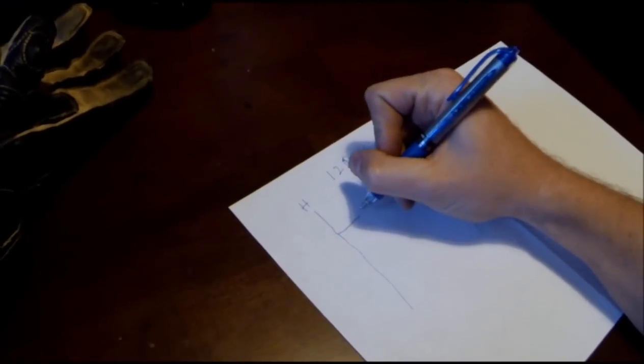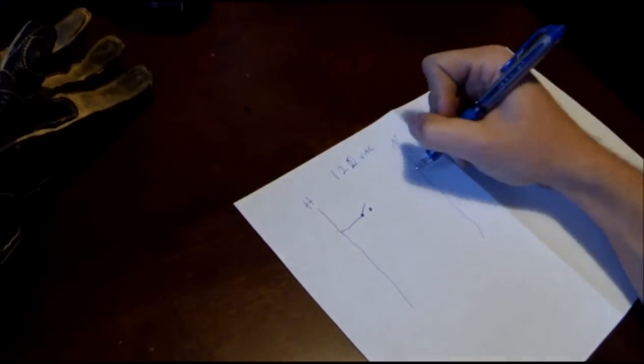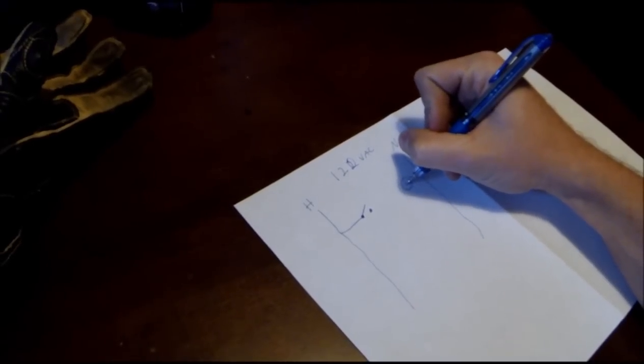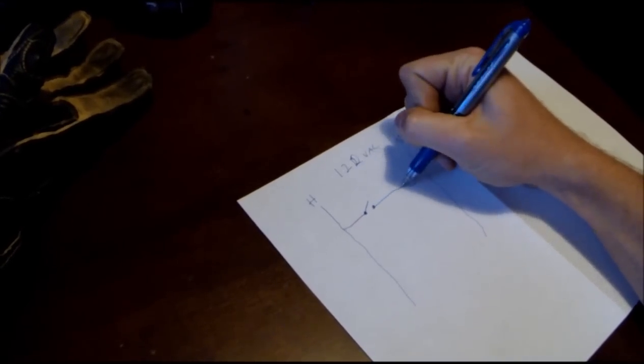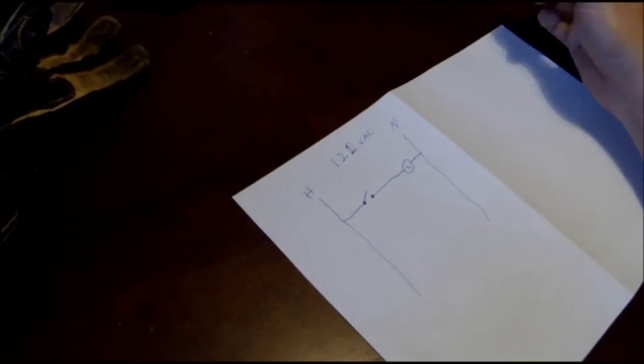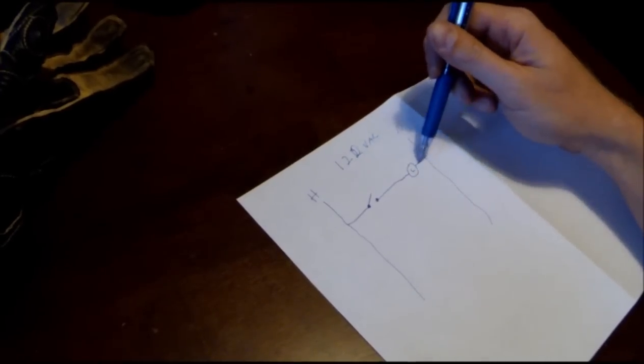This is going to be our hot and our neutral, just as an example. You always switch your hots. So if we had a single pole switch, this was a light bulb. Our neutral goes straight to our light bulb. And that is how you make a light bulb work. It's dark, hot switches on, light comes on.